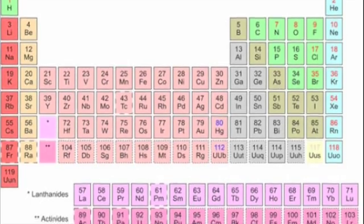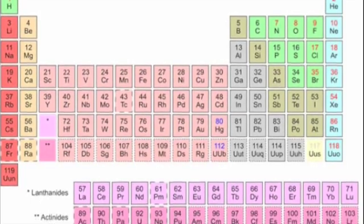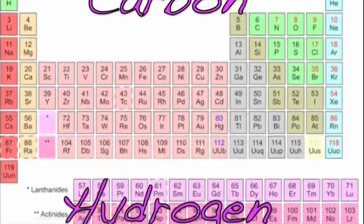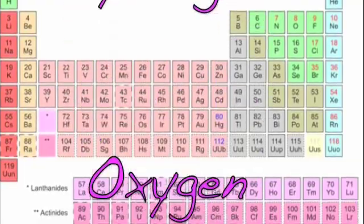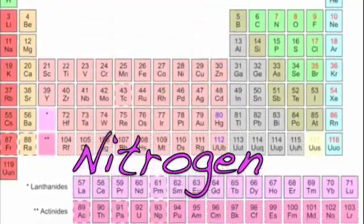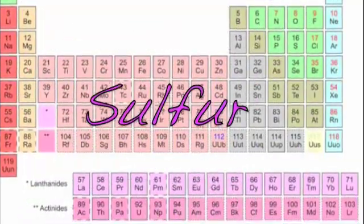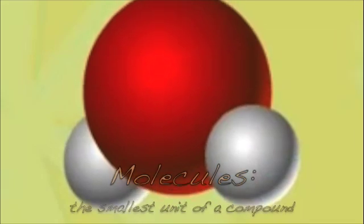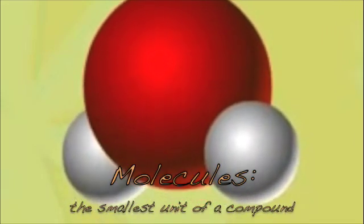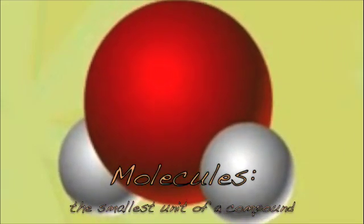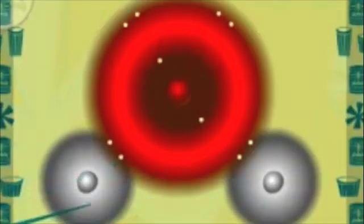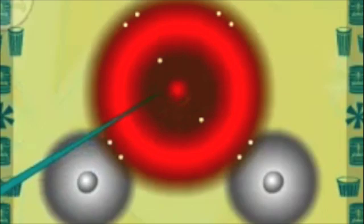The elements that compose 97% of life are carbon, hydrogen, oxygen, nitrogen, phosphorus, and sulfur. On the other hand, molecules are the smallest unit of the compound, which are made up of atoms that have chemically combined.